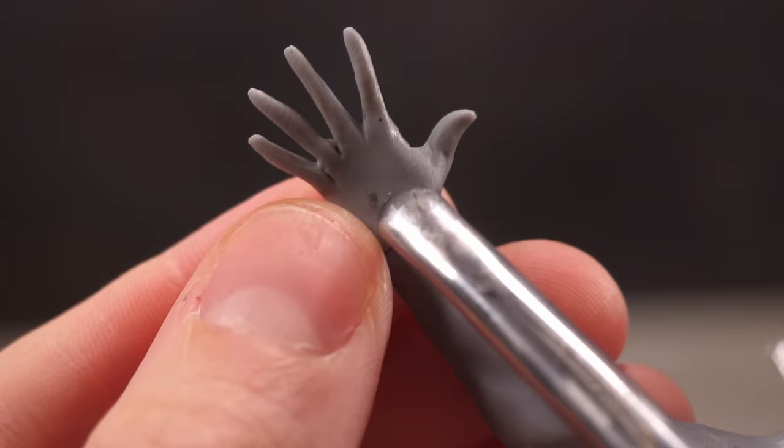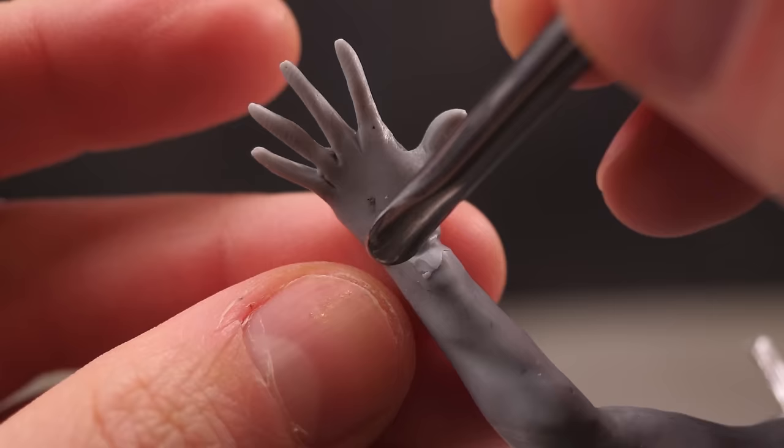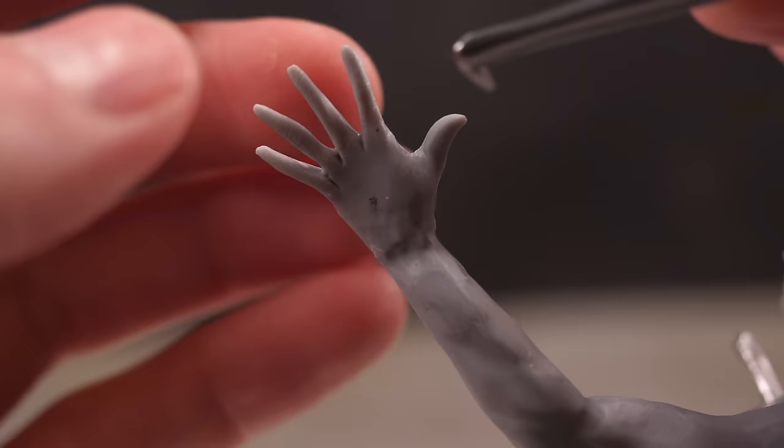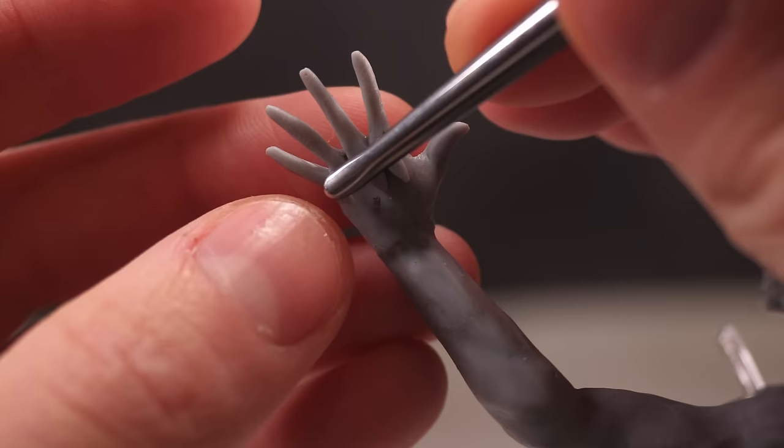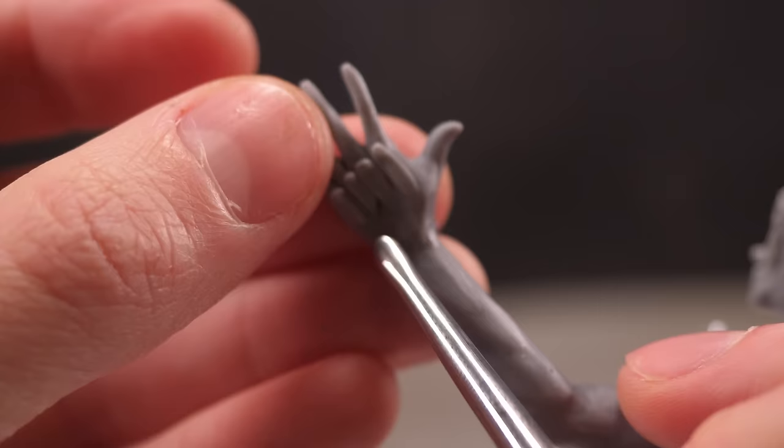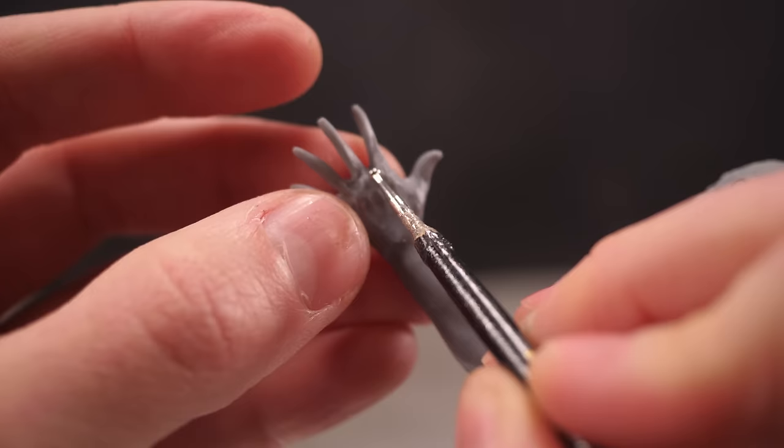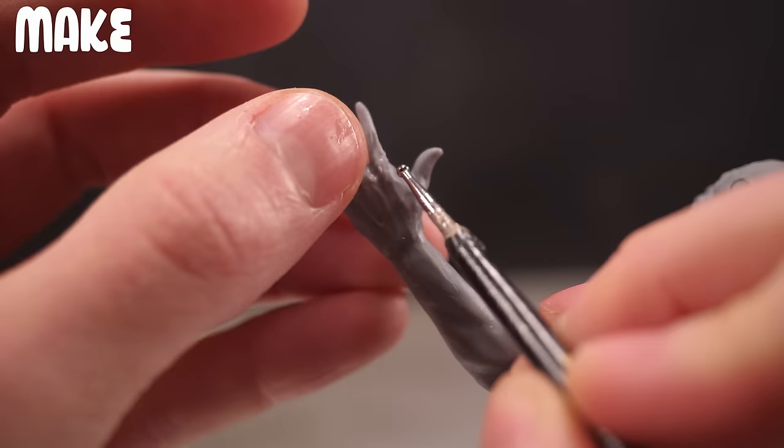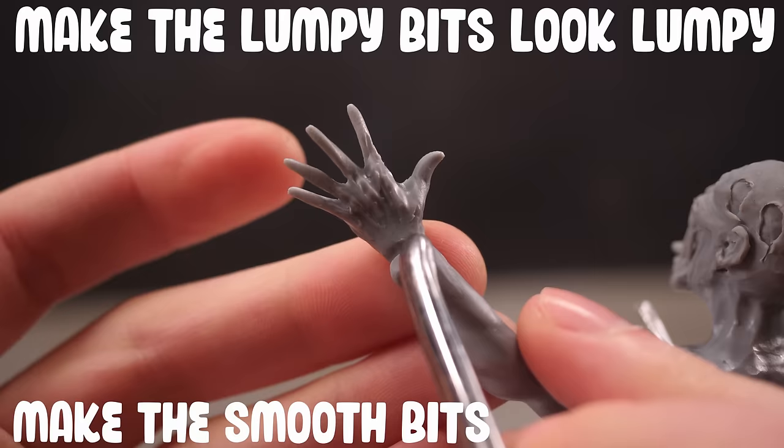I'll then blend the hand into the forearm and add various lumps of clay somewhat haphazardly until my knobbly bits look knobbly and my smooth bits look smooth. If there's one lesson I can impart to aspiring sculptors it's to make the lumpy bits look lumpy and make the smooth bits look smooth.